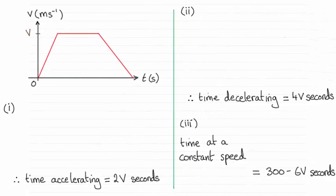Hi there. Now for this question we were told that the total time for the journey from A to B was five minutes and we were asked to find in terms of V the length of time in seconds for which the train is accelerating.